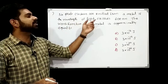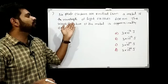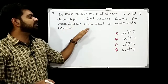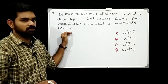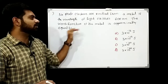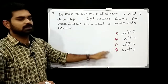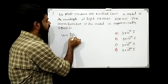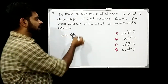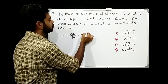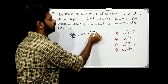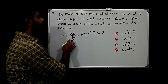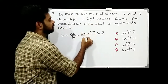No photoelectrons are emitted from a metal if the wavelength of light exceeds 600 nm. The work function of the metal is approximately equal to — using W = hc/λ₀, substituting h = 6.62×10⁻³⁴ J·s, c = 3×10⁸ m/s, and λ₀ = 600 nm.